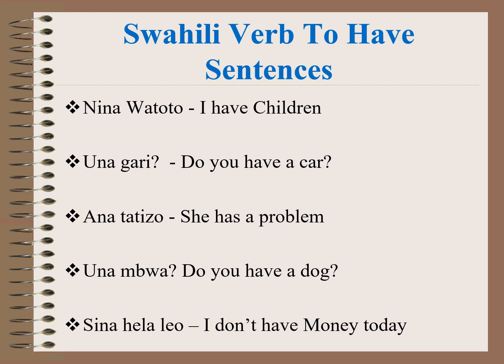Examples of sentences using the verb to have: Nina watoto — I have children. Una gari — do you have a car? Ana tatizo — she has a problem. Una mbwa — do you have a dog? Mbwa is dog. Sina hela leo — I don't have money today. Watoto is children, gari is a car, tatizo means problem, mbwa is a dog, and hela is money.